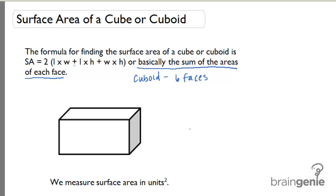So let's take a look at this formula. We have a formula that says the surface area equals two times length times width, length times height, and width times height. We add these up and then we multiply by two. Well, let's figure out where that formula came from.